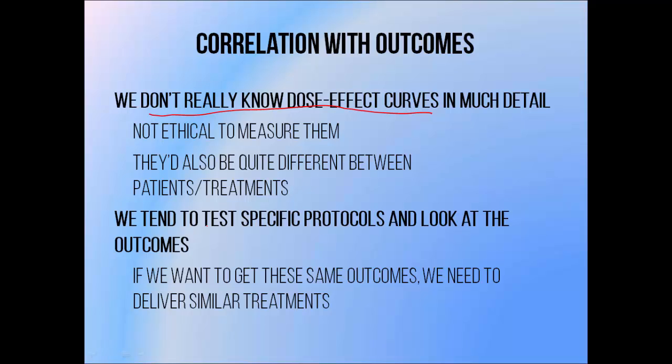It's ethical to try out different doses and delivery schedules if we expect them to deliver results that are equal to or better than the current standard of care, or if we have no idea yet what works, but doing something is preferable to doing nothing, as was the case when radiotherapy was first being pioneered 100 years or so ago. Dose-effect curves are also likely to vary from patient to patient, different tumour types, and different treatment schedules as well. So even if we knew them in some circumstances, it would be difficult to determine if they apply to a given patient.